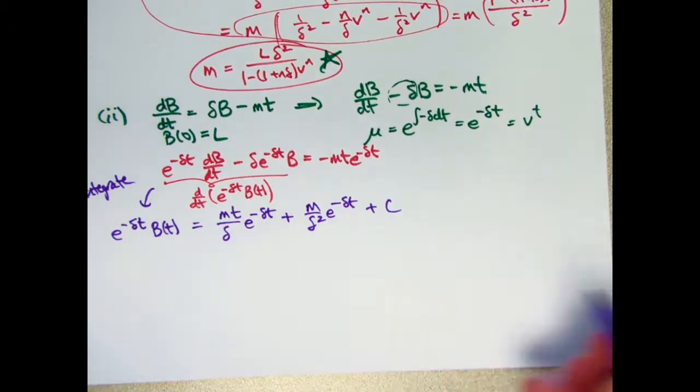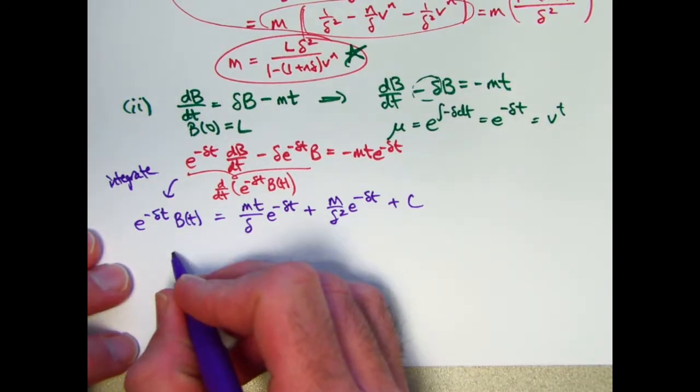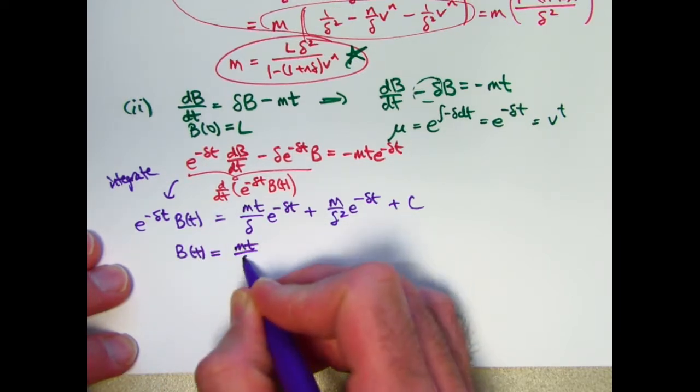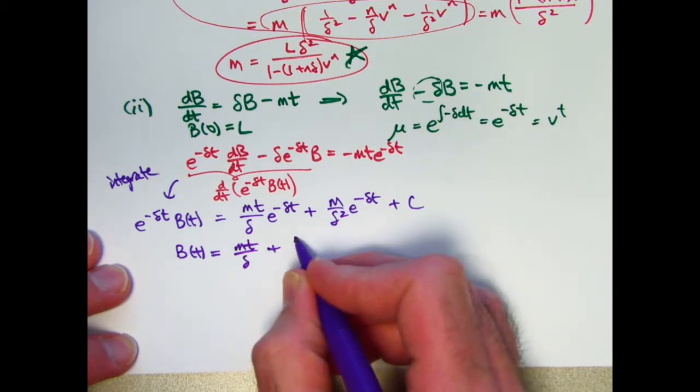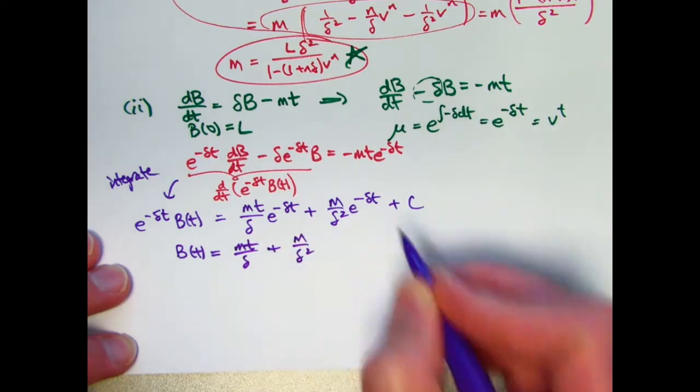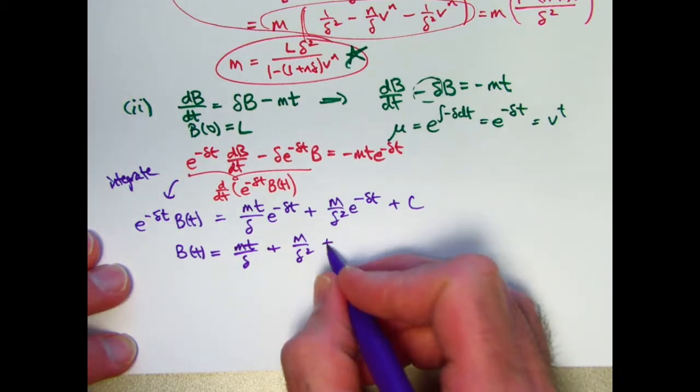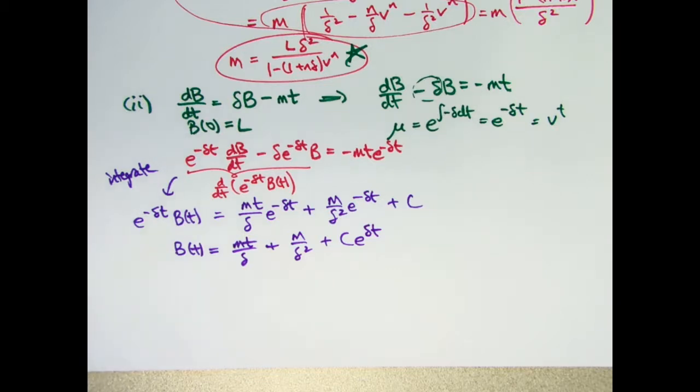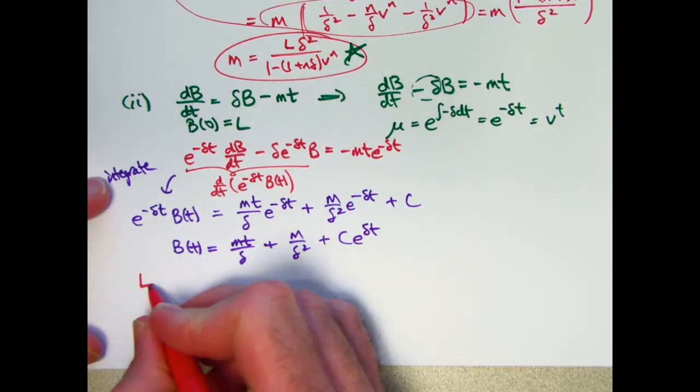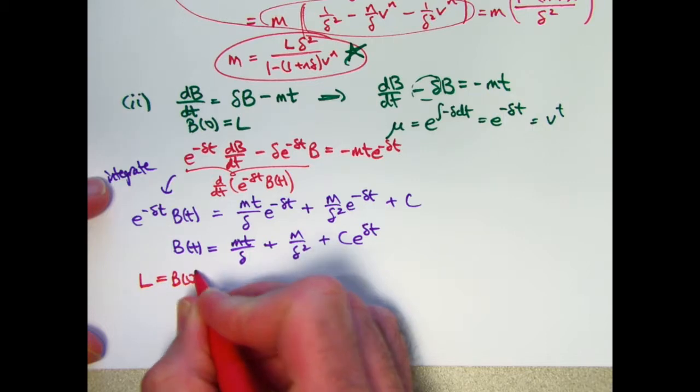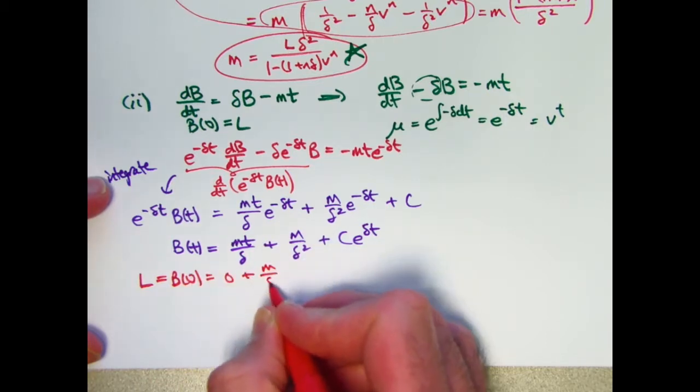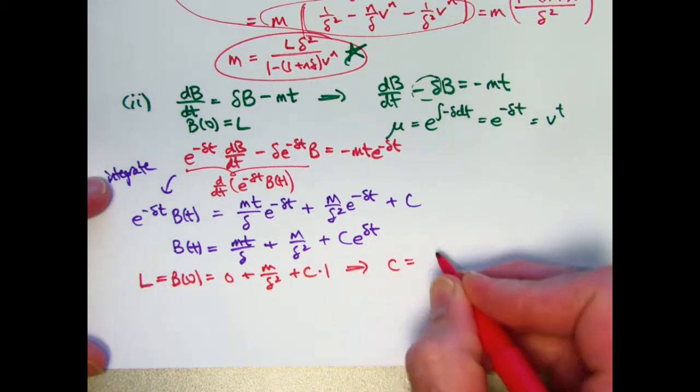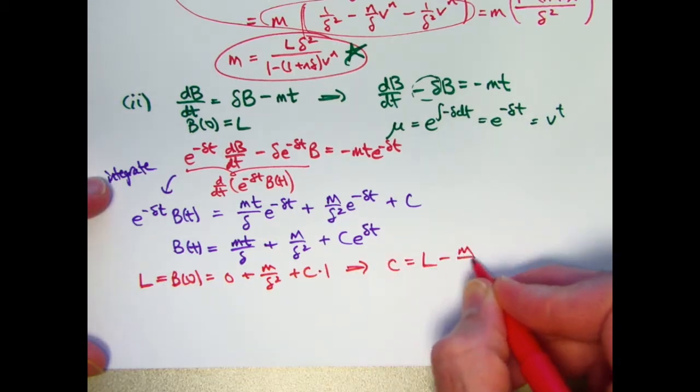Now multiply both sides by E to the positive delta T. The general solution of the differential equation is M T over delta times 1 plus M over delta squared times 1. When I multiply that by E to the positive delta T plus C E to the positive delta T. The initial condition is that B of 0 is L. And that allows me to solve for C. C is going to be L minus M over delta squared.